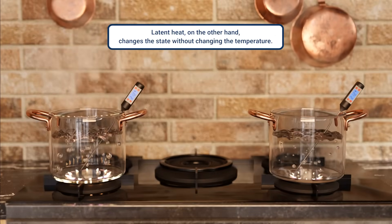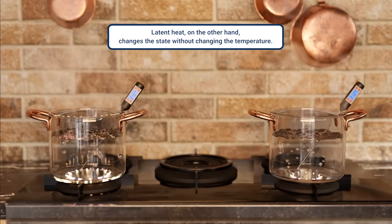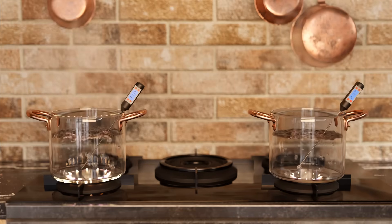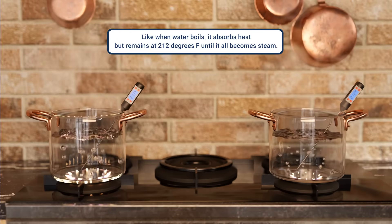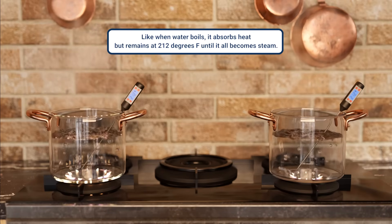Latent heat, on the other hand, changes the state without changing the temperature, like when water boils. It absorbs heat, but remains at 212 degrees Fahrenheit until it all becomes steam.